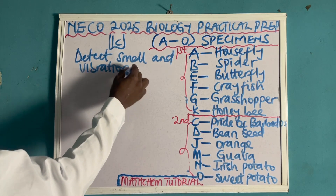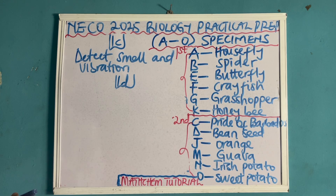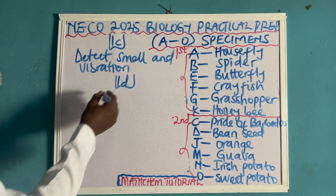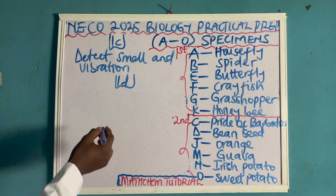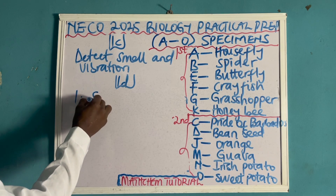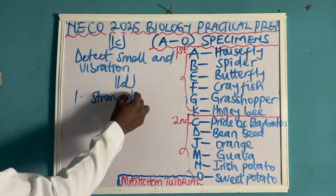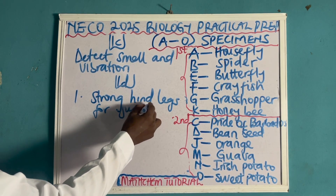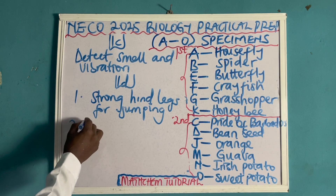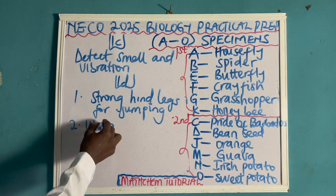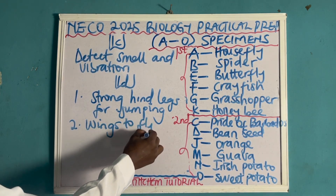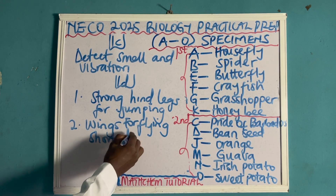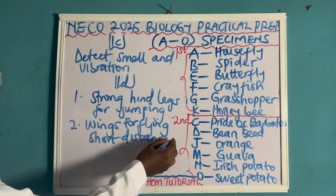Another thing they can ask you — let me name this one 1G — is that you should state two ways specimen G is adapted to locomotion. Specimen G is the grasshopper. The two adaptations it has are: number one, strong hind legs for jumping; and number two, wings to fly short distances.